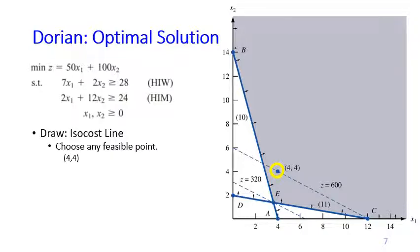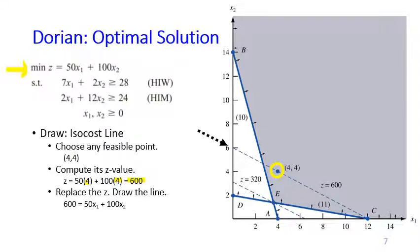First, we choose any feasible point. For example, 4,4. We compute the Z value by plugging in X1 equals 4 and X2 equals 4 to this equation. We got Z equals 600. And then replace the Z with this value 600, and then we get the ISO cost line.